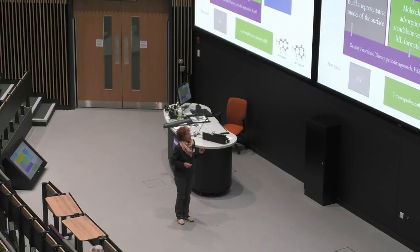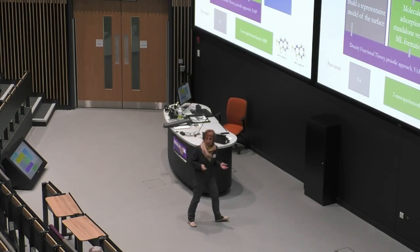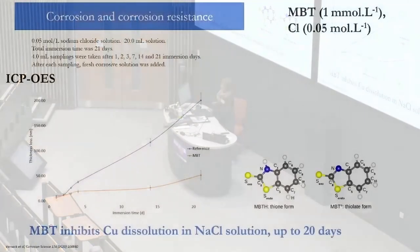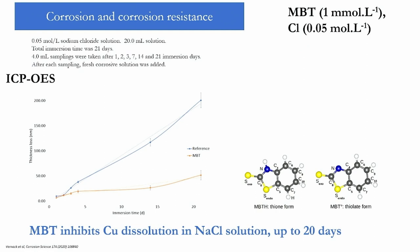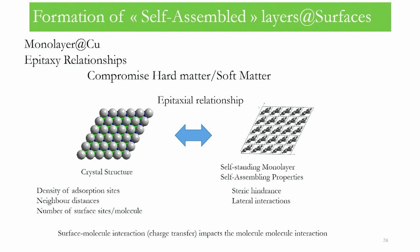Now the second part, which I will go through quickly to reach the part where the story goes differently — an example where it doesn't work. We put MBT on copper, and MBT is protective against corrosion of copper. We studied it on metal and oxide and showed that it adsorbs on the metal. It seems easy to put one molecule on a metal surface but it is in fact very difficult, because on a metal there are many adsorption sites and molecules tend to self-assemble, requiring finding the best epitaxy relationship between hard matter and soft matter.